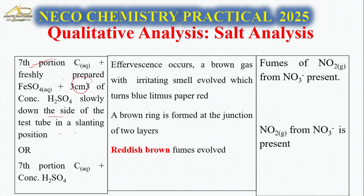For the brown ring test: a brown gas with irritating smell evolves, which turns blue litmus paper red. Specifically, when you add concentrated H₂SO₄ to FeSO₄ solution, a brown ring forms at the junction of the two layers.